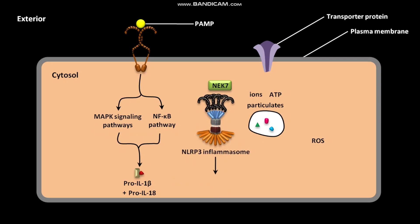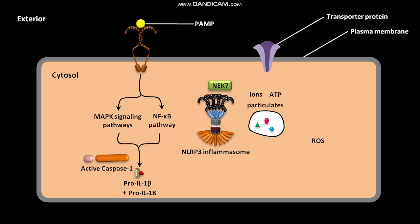In the next step, inactive Procaspase-1 undergoes cleavage and forms Active Caspase-1. Active Caspase-1 then catalyzes a biochemical reaction in which Pro-IL-1β and Pro-IL-18 are cleaved to form IL-1β and IL-18 respectively. IL-1β and IL-18 are known as mature cytokines.